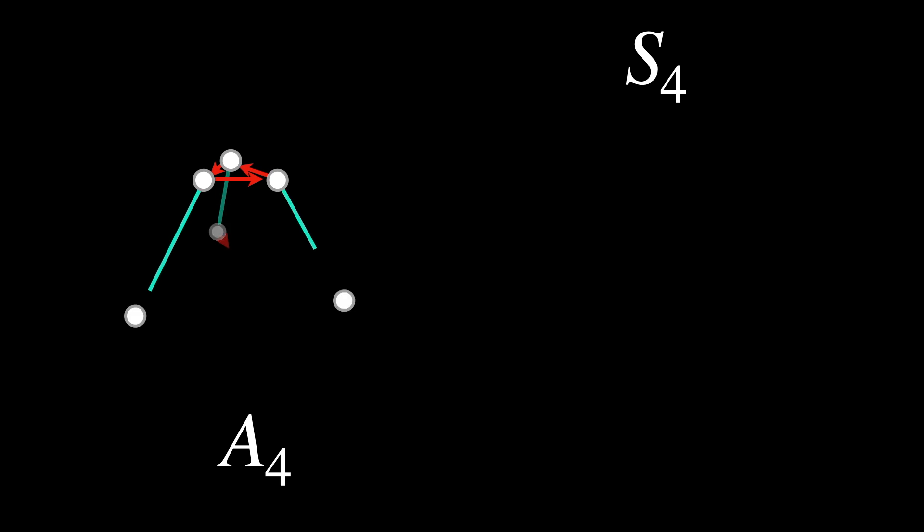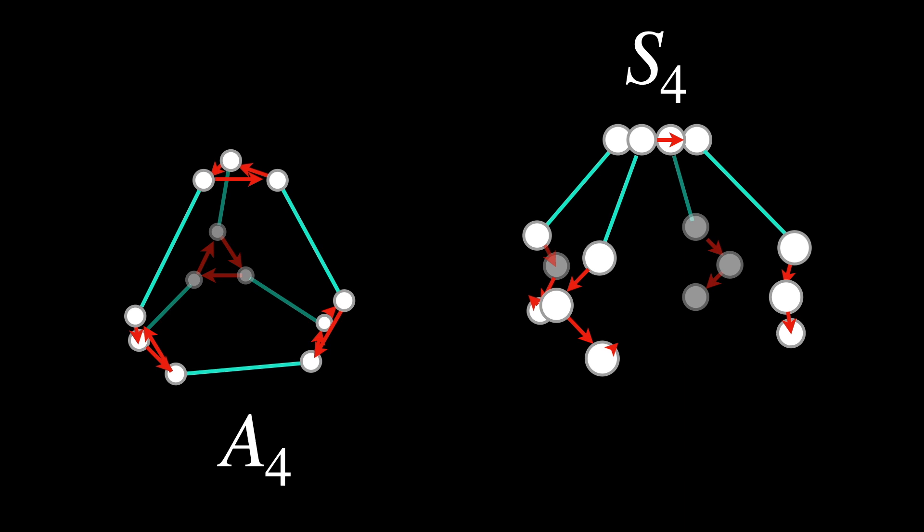So out of the six possible permutations, we get three. So A3. Visually, the Cayley diagrams for alternate groups will be the half of the permutation of symmetry groups. Like this A4 arranged on a truncated tetrahedron is the half of this S4 truncated octahedron.